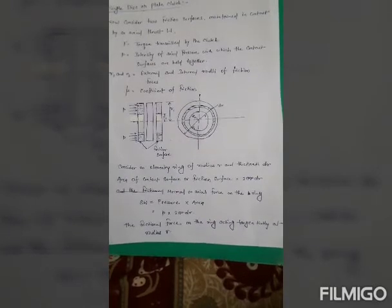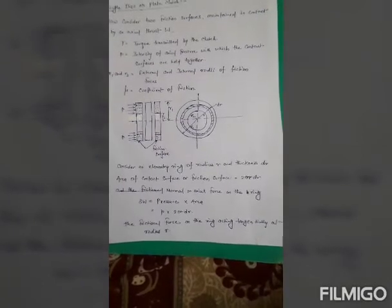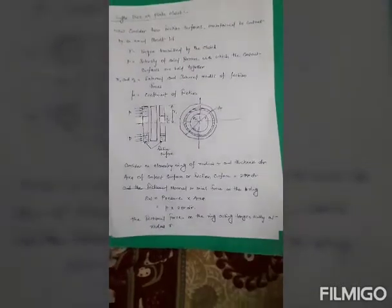Del W is the pressure into area, small p equal to 2πr into DR. The friction force on the ring acting tangentially at radius small r, FR is equal to μ into del W, μp into 2πr into DR. The frictional torque acting on the ring TR is equal to F into r. So TR is equal to 2πμ small p r cube into DR.